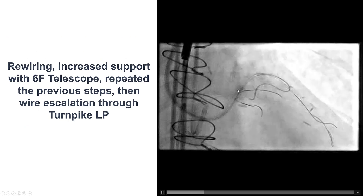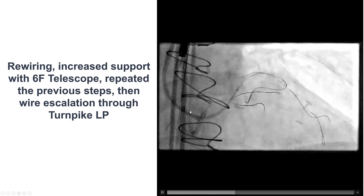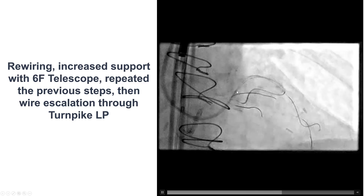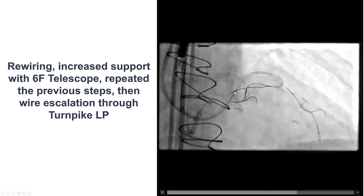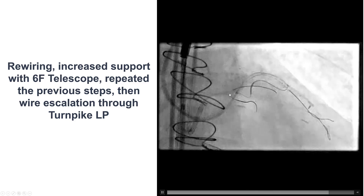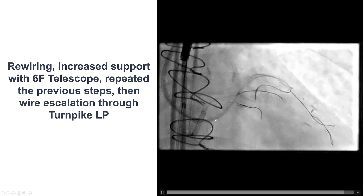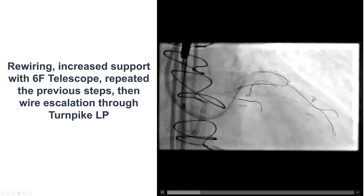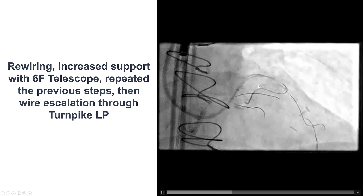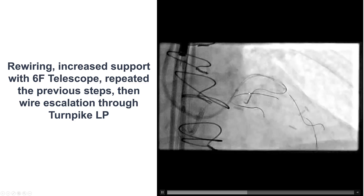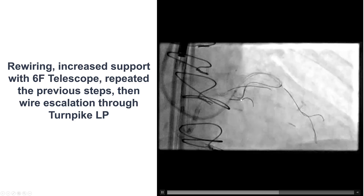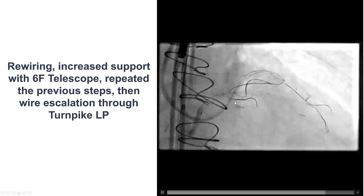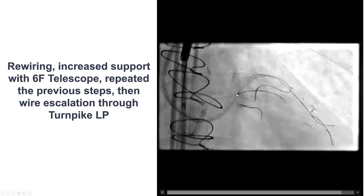This is one of the lessons of this case, in which when engagement is not good, using a guide extension can really increase the support of the system. This was a GuideLiner extension, and then once again we were able to advance a Corsair wire retrograde and then deliver a Turnpike LP, which is now pointing towards the distal cap.